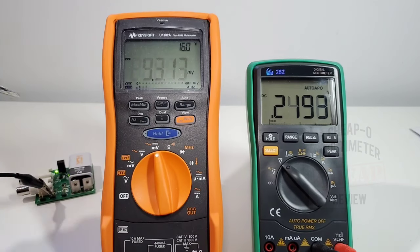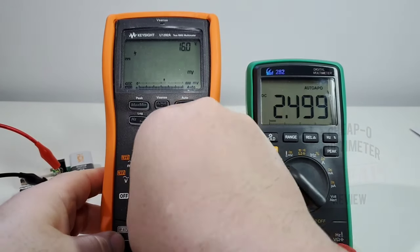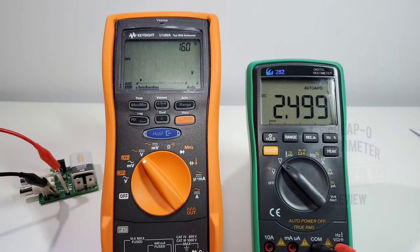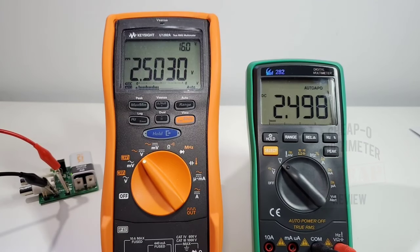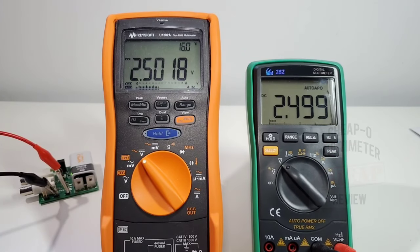And there we go, now 249.9, so fairly close to the Keysight. We're going to switch things over now. We should be looking at 2.50 volts. 2.5032-ish for the Keysight, 2.49 for the Z282 Zeest. All in all fairly close. Just a little bit of shake and bake on the Zeest for not being able to pull up that 250 millivolts whilst in millivolt range. Interesting.